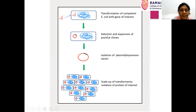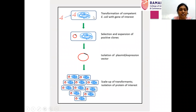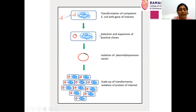This is the diagrammatic representation of what we have discussed. As mentioned, first we go with the transformation of competent E. coli with the gene of interest. Making the cells competent means making them ready for transformation so they are able to take up external DNA. Then you have to select the transformed cells — selection and expansion of positive clones is carried out based on selectable markers like antibiotics.